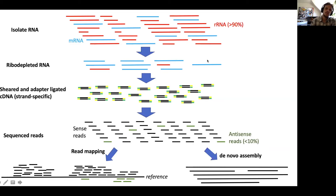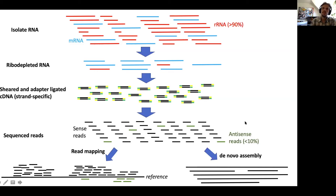Hopefully after you ribo-deplete your rRNA, you end up with mostly mRNA, tRNA, and other various kinds of RNA that might tell you about your sample. After this, you do your sequencing prep, sequence your cDNA (complementary DNA), and end up with your sequence reads. Most of them should be sense reads and not antisense, although you will have some antisense. I'll talk more in this lesson about how to deal with antisense and sense reads when using HTSeq count for read counting.